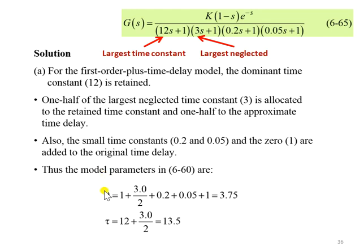Therefore, the total time delay is equivalent to 1, this is the original time delay here. And this one is from Skogestad's half rule, the largest neglected has been divided into 2. And then this is the 0.2, this is 0.05, and this is from the zero above here.